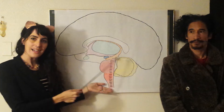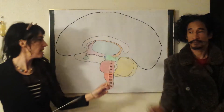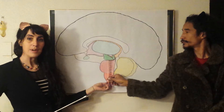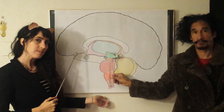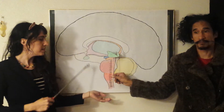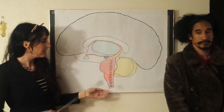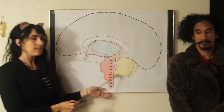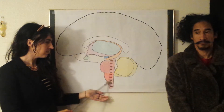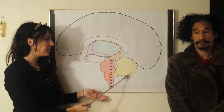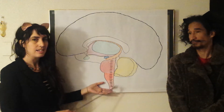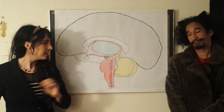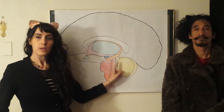We know the three basic parts: we have the hindbrain, the midbrain, and the forebrain. Now first we'll start with the hindbrain — notice that it looks like a snail all through here, the snail following the hind in the race.